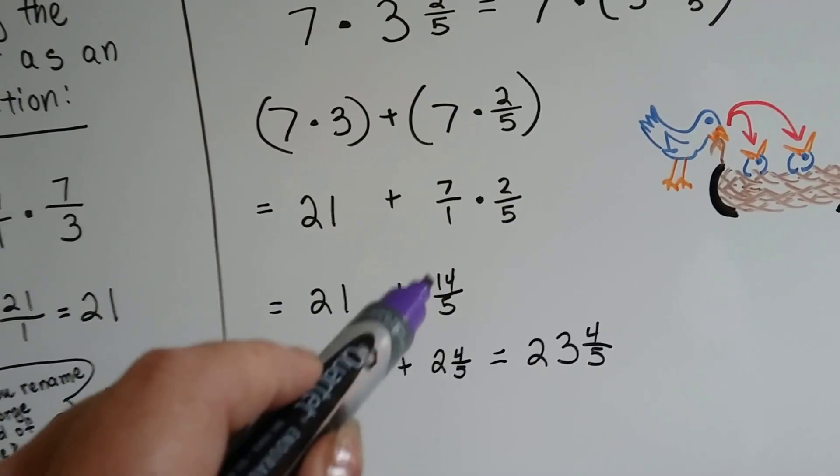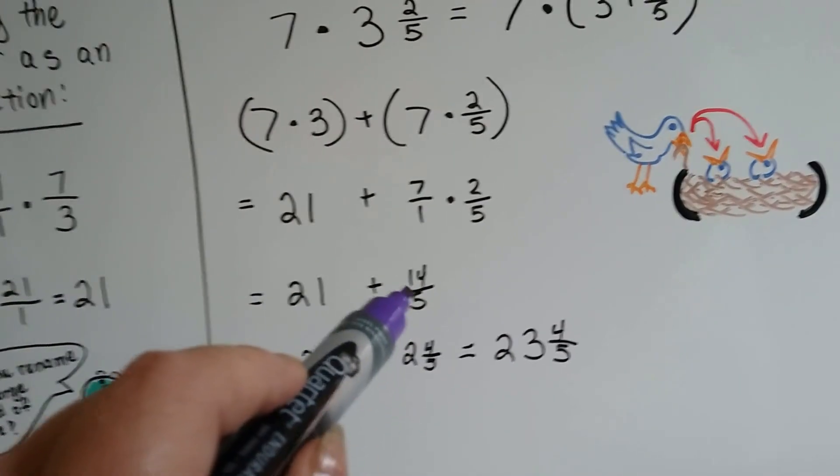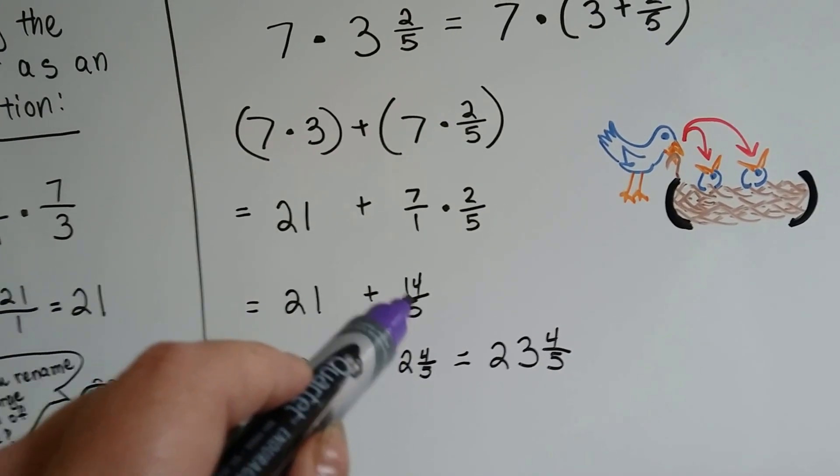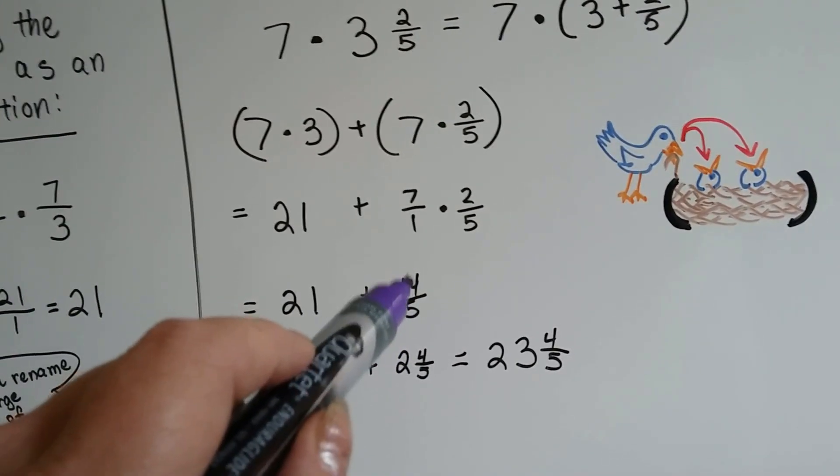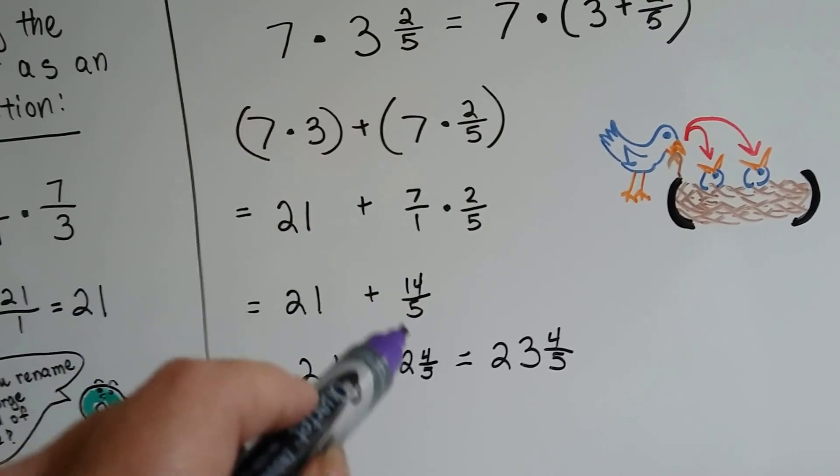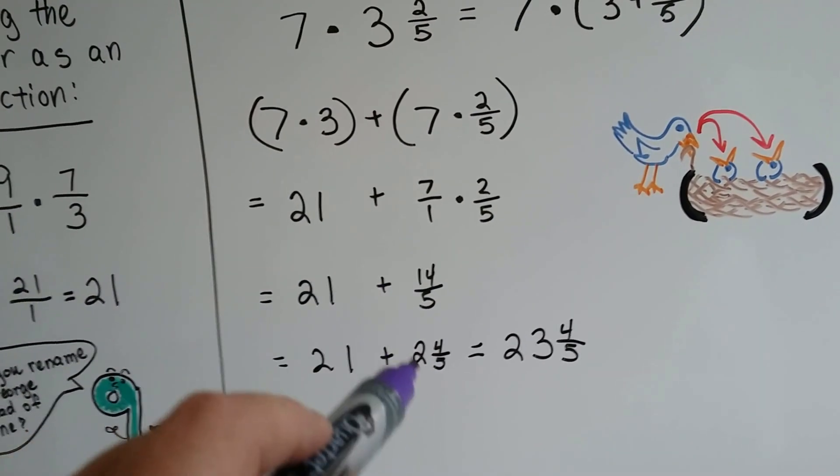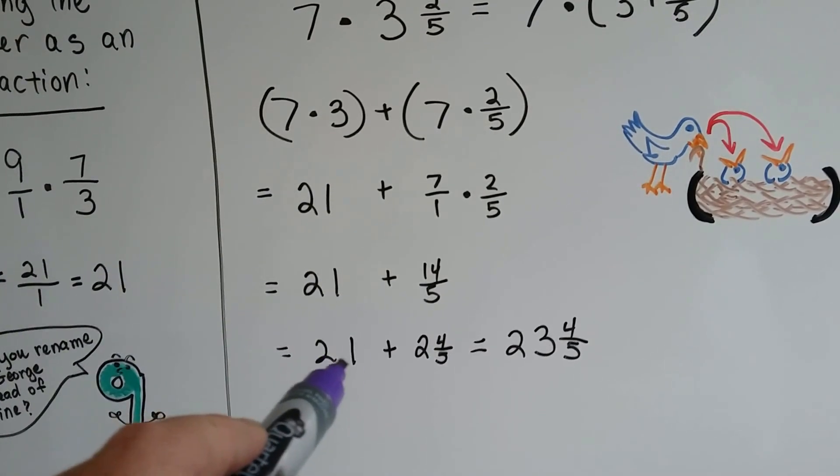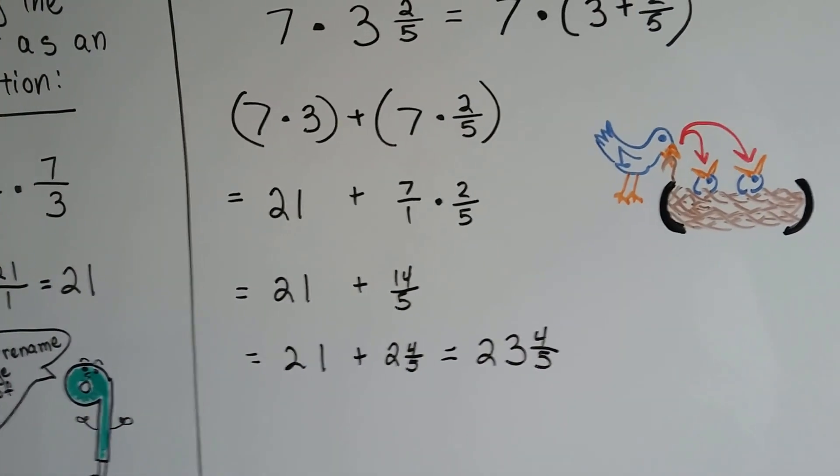We need to reduce the 14 fifths to its lowest terms. It becomes 2 because there's 5 fifths in here and 5 fifths. That would make 10 fifths. And there's a little 4 fifths left over. So that's 2 whole ones with 4 fifths left over. We add that to the 21 and we have 23 and 4 fifths.